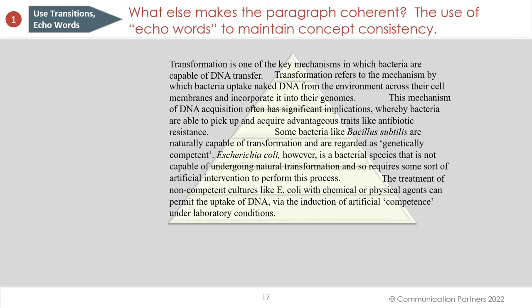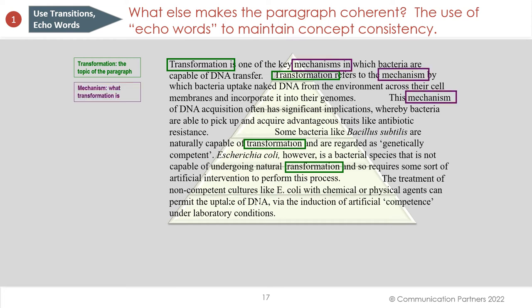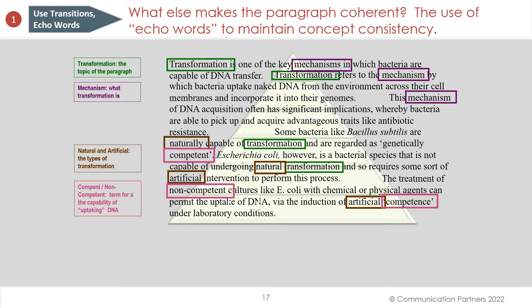Echo words: we use them consistently and don't change our terms. Transformation is the topic of the paragraph. Mechanism is what transformation is. Natural and artificial are the types of transformation. Competent and non-competent describe the capability of taking up DNA. And we use the word 'uptake' consistently — that verb conveys the key element in the process. Consistent terminology all the way through. It is not repetitive; it echoes. The echo words make the paragraph easy for the reader to process mentally and help establish the logical connections.